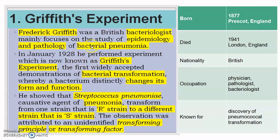Frederick Griffith was a bacteriologist mainly studying the epidemiology and pathology of bacterial pneumonia. In January 1928, he performed his well-known experiment, popularly known as Griffith's experiment. He discovered bacterial transformation, in which a bacterium changes its form and function.